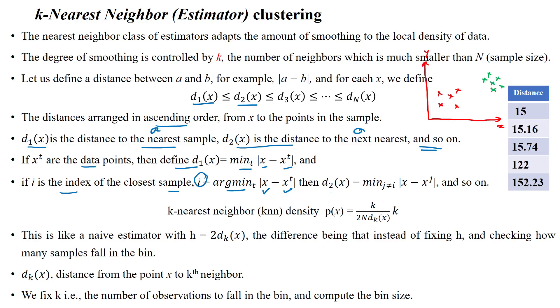d2(x) is the minimum distance between the data point x and the j-th data point, where j and i refer to different data points. The samples are given in the plot as different classes of data points, meaning different clusters.